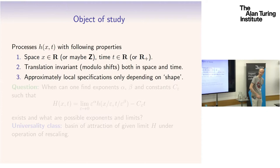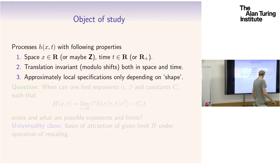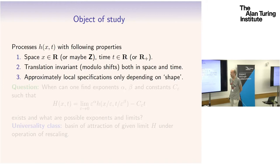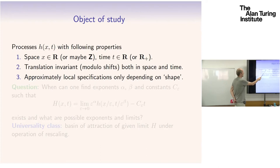Let me try to formalize this a little bit. A model here is basically a stochastic process with a time and a space variable. In the whole talk, space is going to be one-dimensional. That's what the 'one plus one dimensional' in the title means: space is one-dimensional and then there's time, which is also one-dimensional.